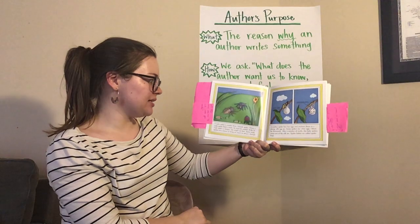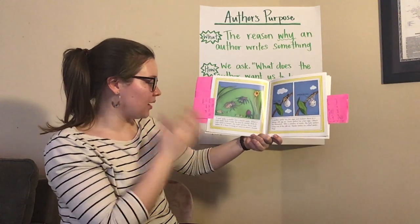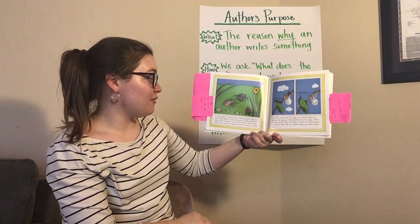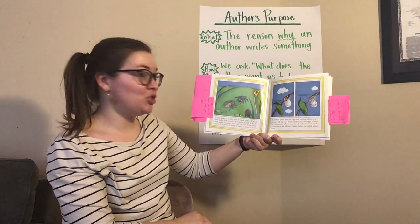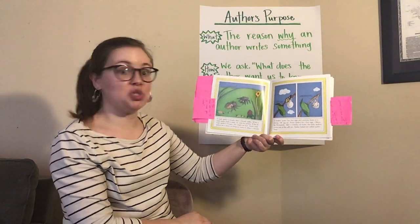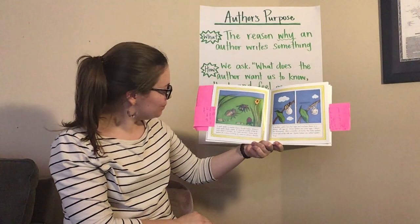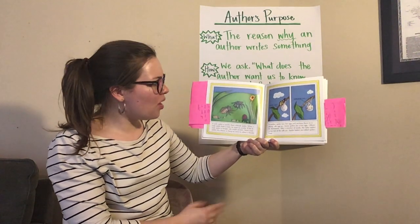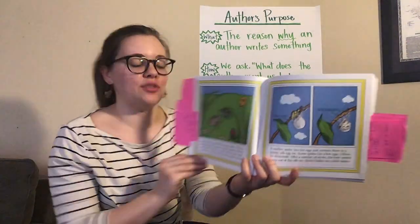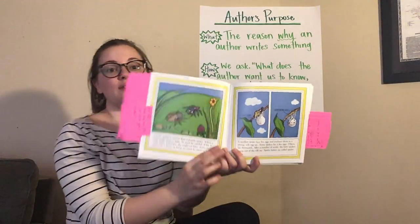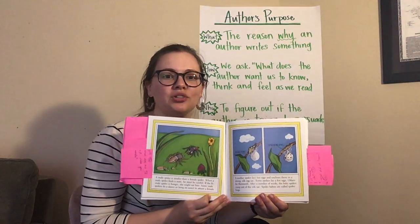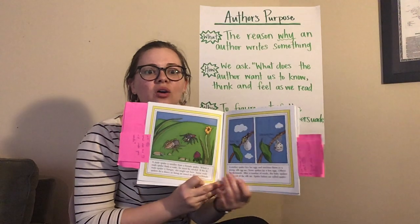A male spider is smaller than a female spider. When a male spider finds a mate, he must be careful — if the female spider is hungry, she might eat him! Some male spiders do a dance or bring an insect to attract a female. What are you wondering about spiders now? Go ahead and pause the video to tell someone around you what you're wondering about.